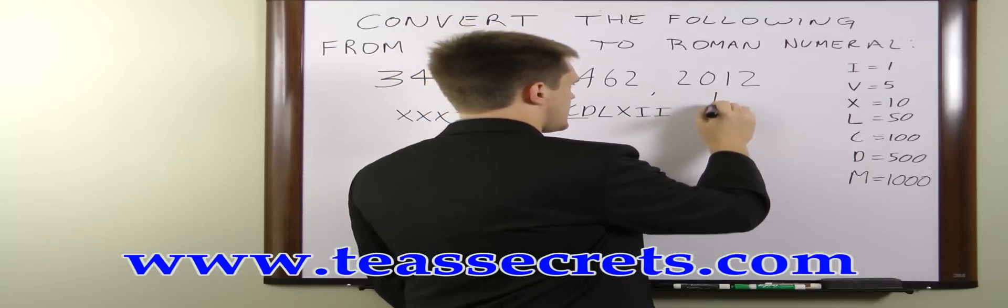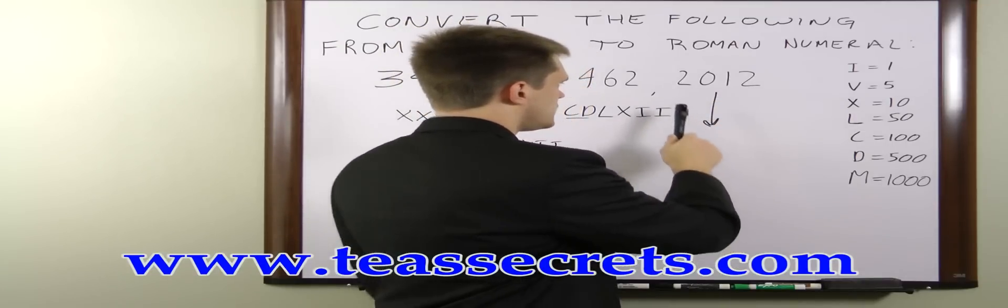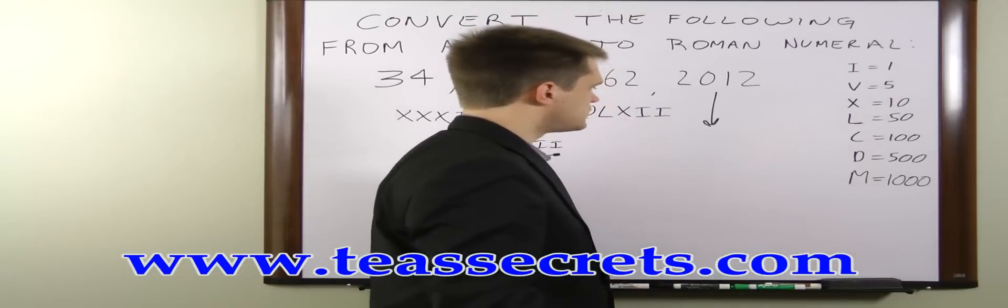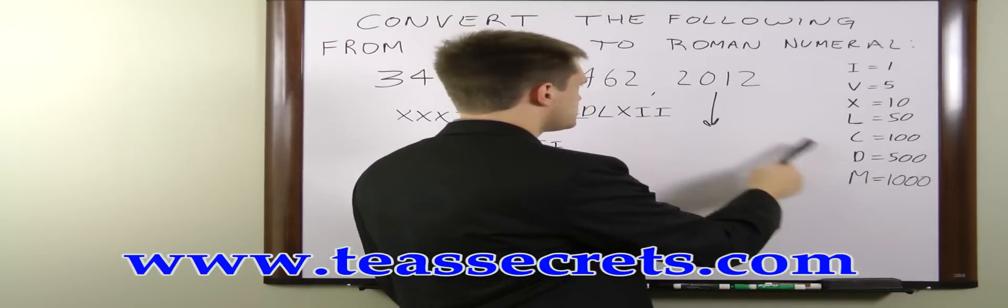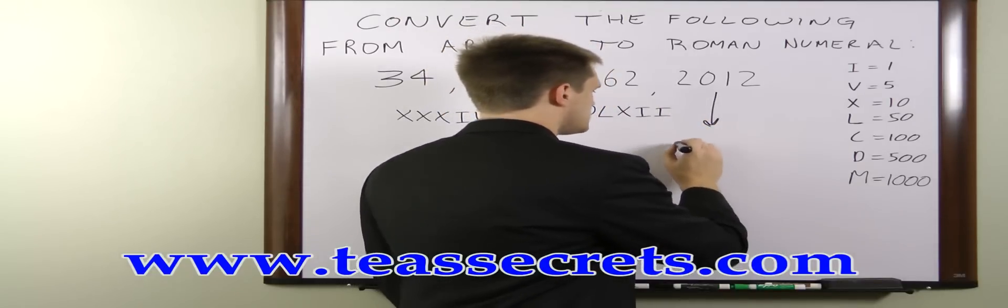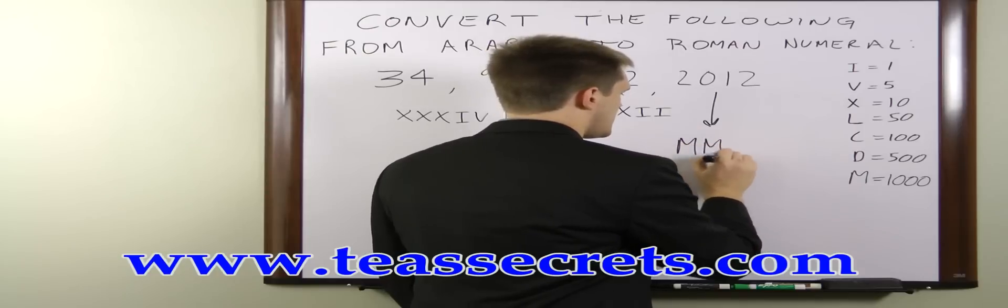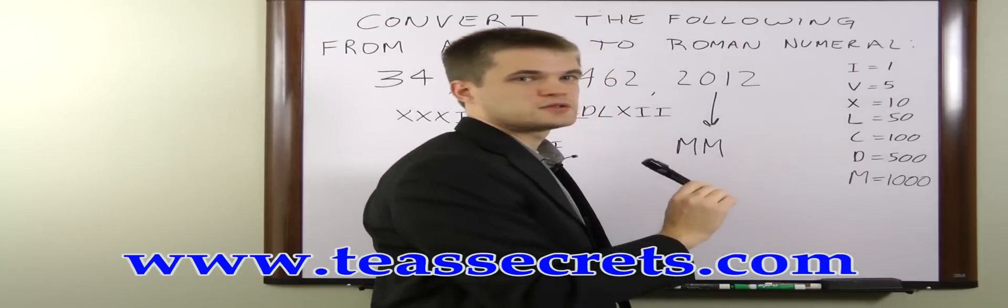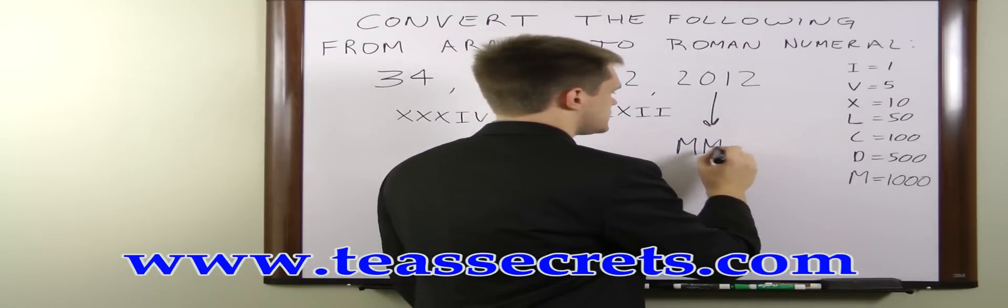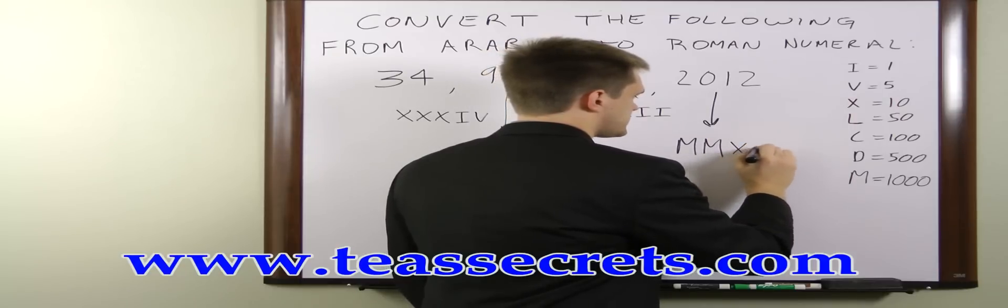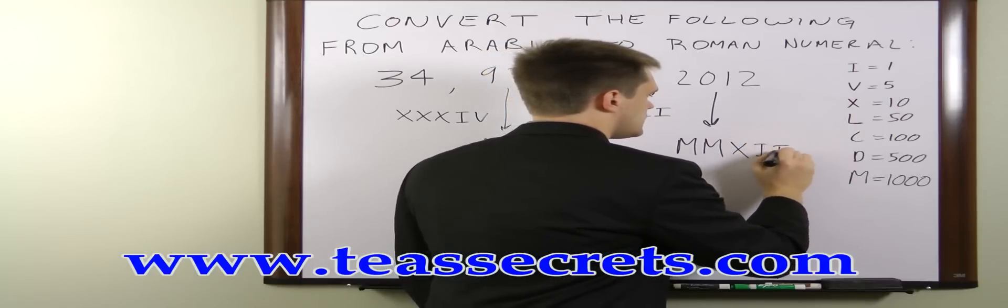And finally, we have 2012. M is the highest unit we have. So we just have as many M's as we have thousands. So we write M, M, and that takes care of the 2,000. And then we have 12. So we have M, M, X, I, I.